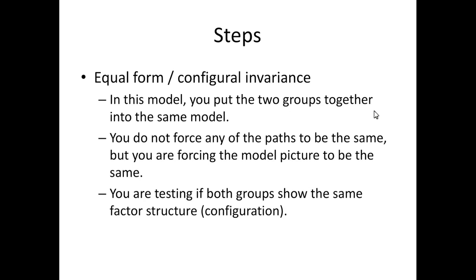The first step is sometimes called equal form, but more often you'll see it called configural invariance. Configural invariance means that the configuration of the model is the same between groups — if invariant, it is not different. We take those two groups and nest them together in the same model. We don't force any of the paths or loadings to be the same, but we're making sure the picture is the same — that item one goes with factor one for both groups. Do they show the same configuration?